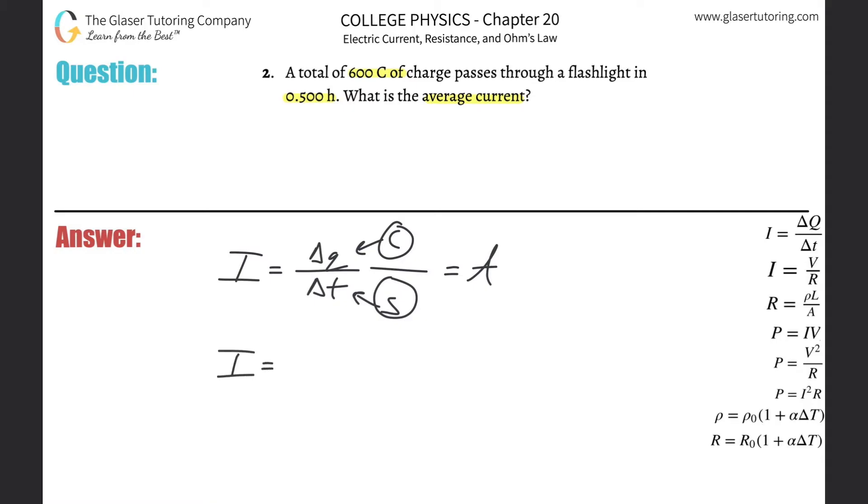So basically, all I need to do is plug in the values, 600 Coulombs divided by 0.5 hours. We need to convert that into seconds.